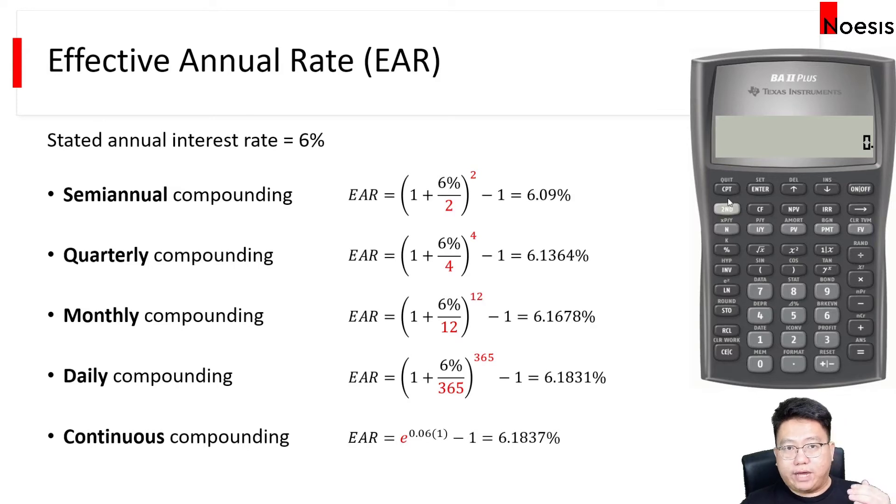First off, to access the interest conversion function, we will press 2nd, 2, so that goes into the ICONV worksheet, which stands for interest conversion.